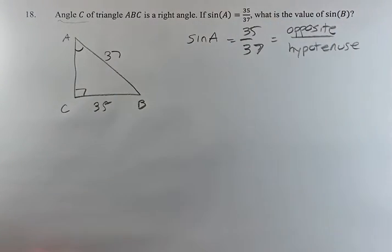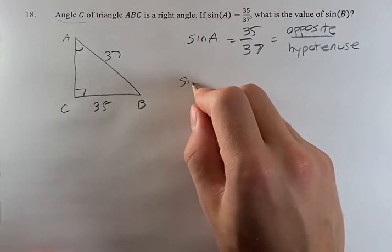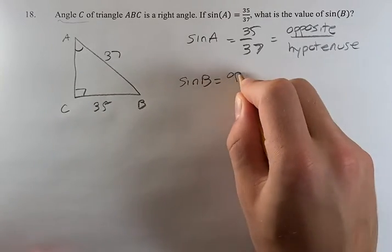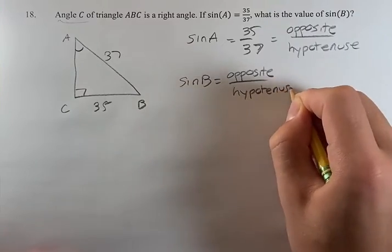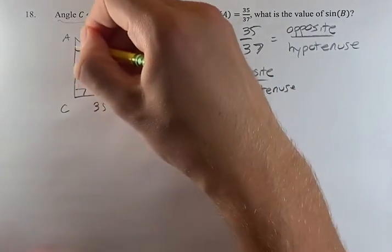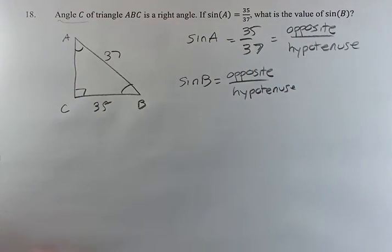So what is going to be the value of sine B in this situation? Sine B is going to be opposite over hypotenuse. From angle B, the opposite is going to be AC, which we don't know.